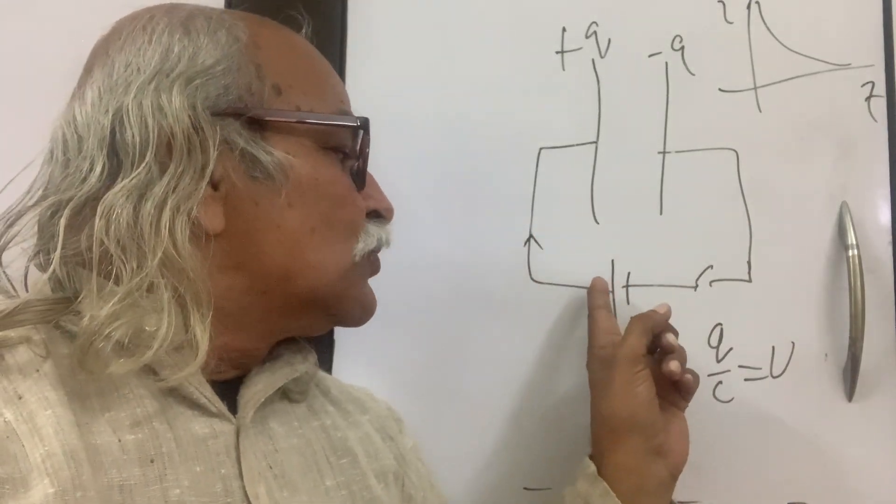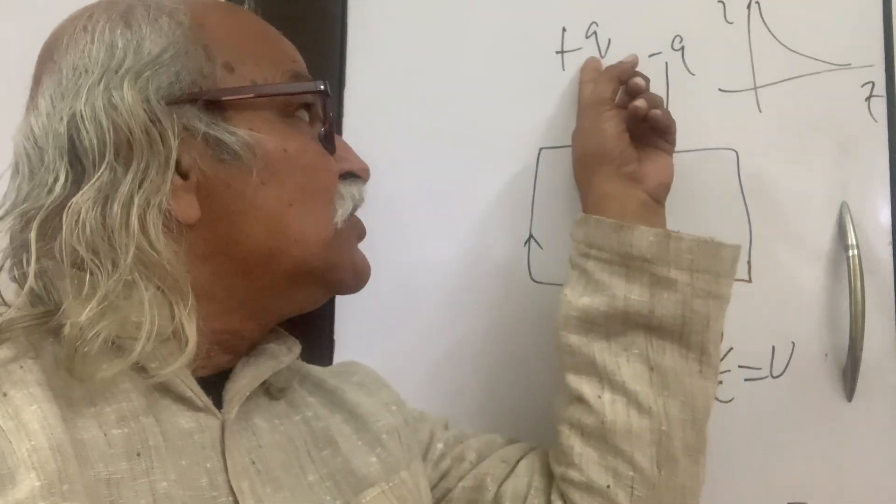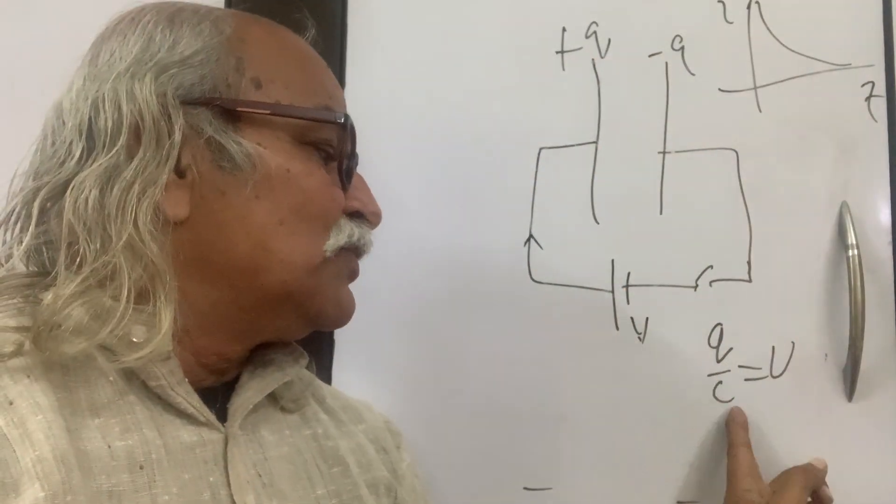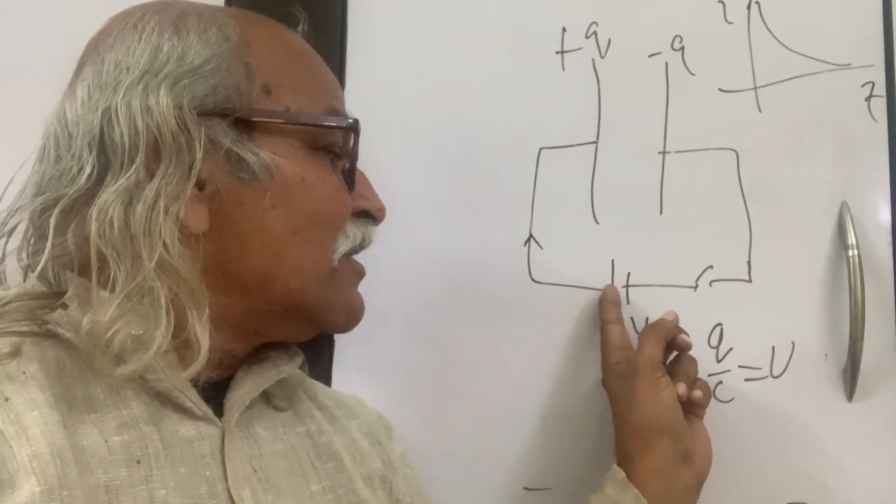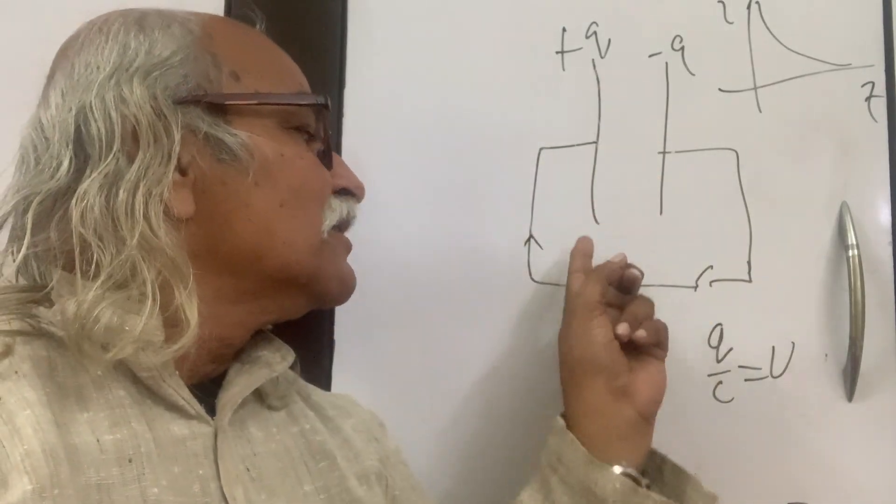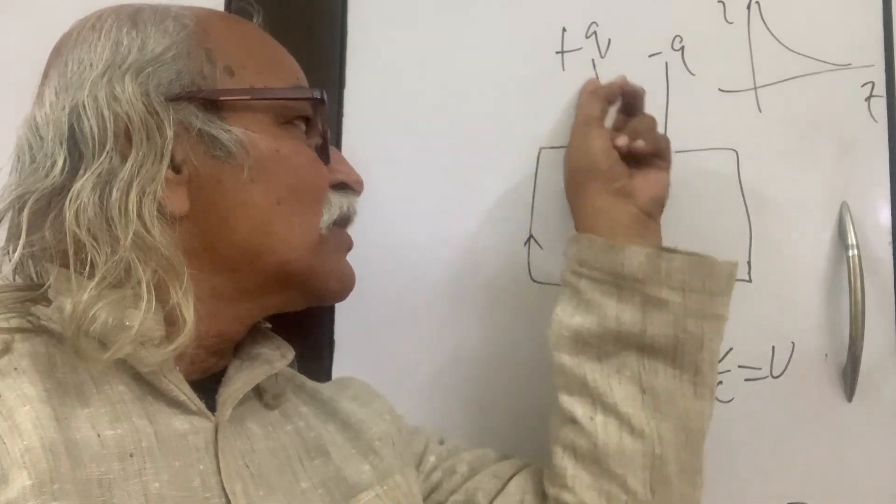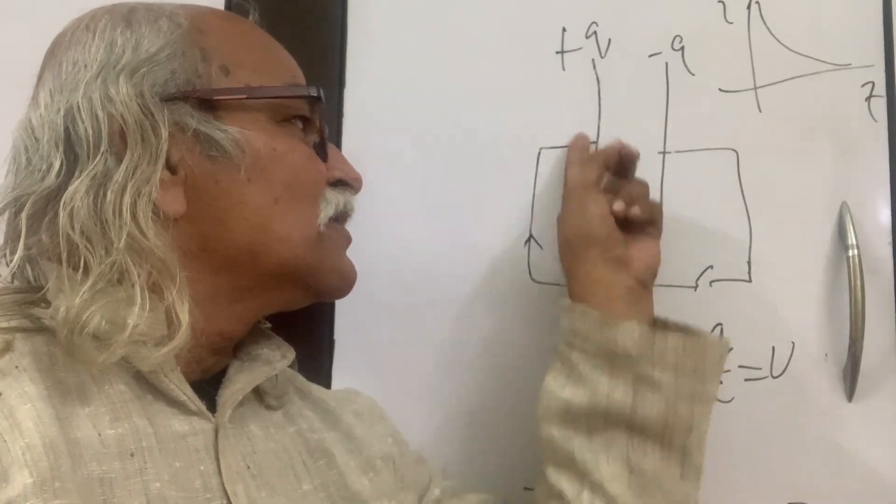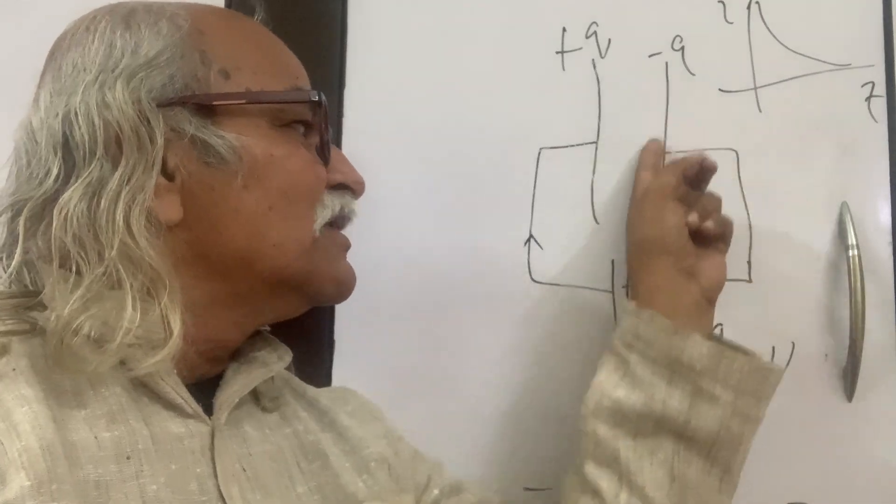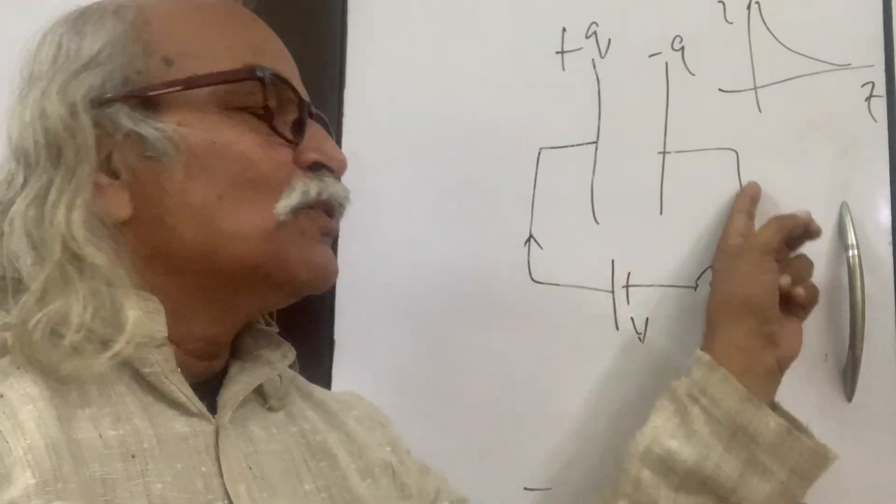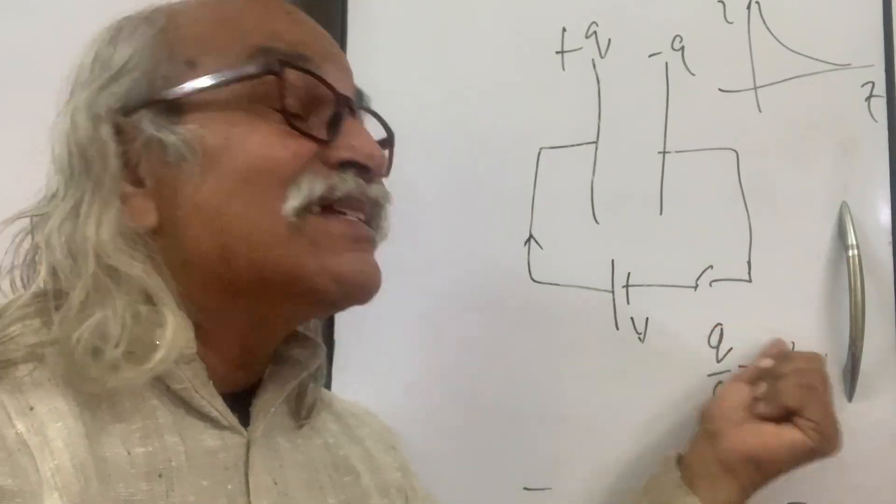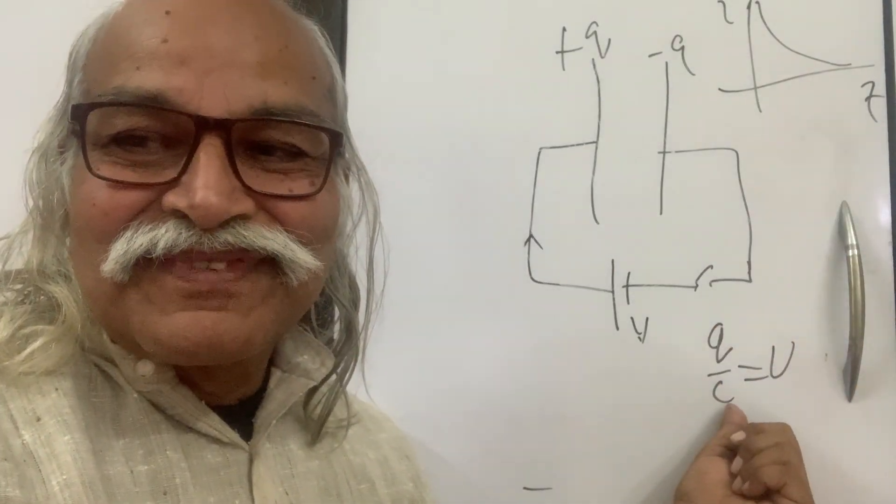So this charge builds up from 0 to this Q, this much of Q, C times V. And for that, the charges are coming, getting stored here, more charge comes, gets stored here, charge comes from this side, negative charge is stored here, and so on, this whole process. And once that charge is reached, the current stops.